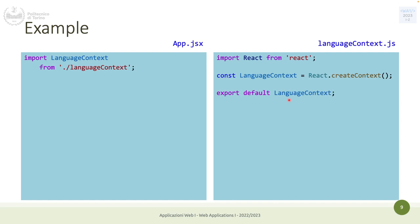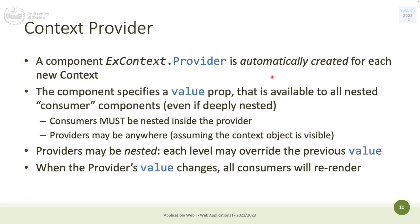Then you can create a context because you want to make this information available to all components. You create another file — for instance language-context.js — in which you create a context with no default value. Then from app.js you import the object you just created, which is the context object that has one provider and one consumer definition for this specific context.